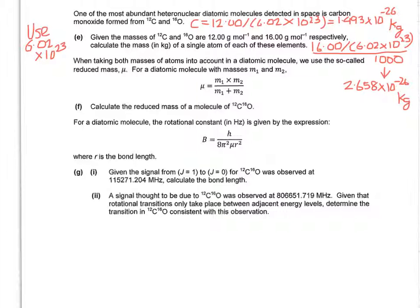The next one says when taking both masses of atoms into account in a diatomic molecule, we use the so-called reduced mass, μ. For a diatomic molecule with masses M1 and M2, μ is M1 times M2 over M1 plus M2. Calculate the reduced mass of a molecule of 12C16O. I've now labelled those two values as M1 and M2 in black, so you can insert those into the equation. That should give you 1.139 × 10^-26 kilograms.